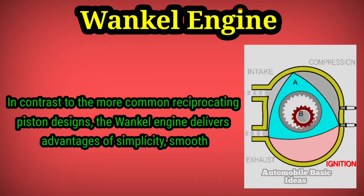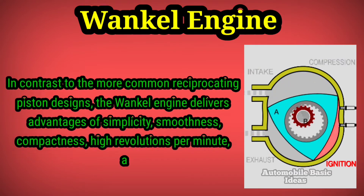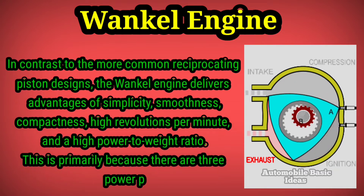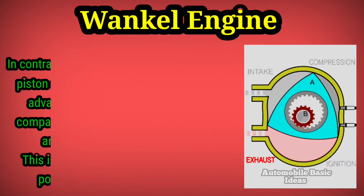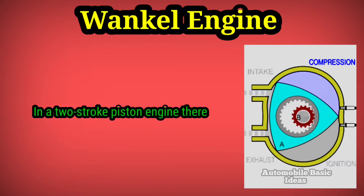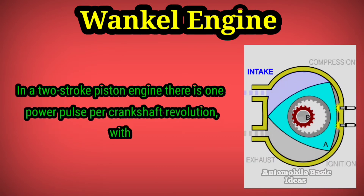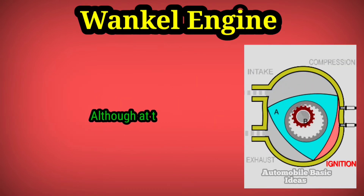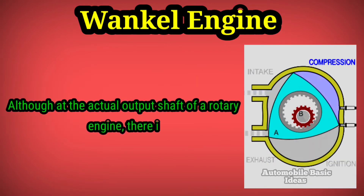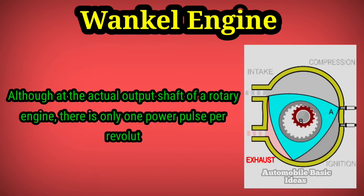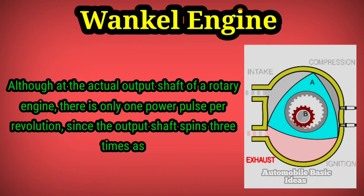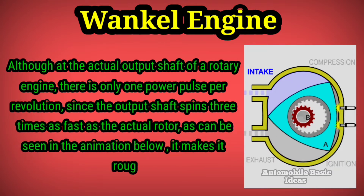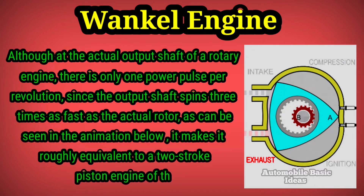In contrast to reciprocating piston designs, the Wankle engine delivers advantages of simplicity, smoothness, compactness, high RPM, and a high power-to-weight ratio. This is primarily because there are three power pulses per rotor revolution. In a two-stroke piston engine there is one power pulse per crankshaft revolution, and one or two in a four-stroke. At the output shaft of a rotary engine there is only one power pulse per revolution, since the output shaft spins three times as fast as the rotor.